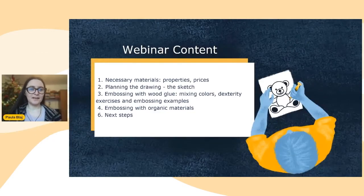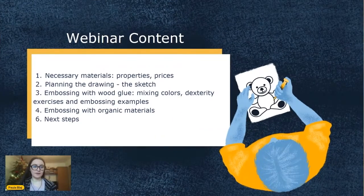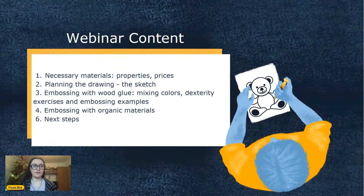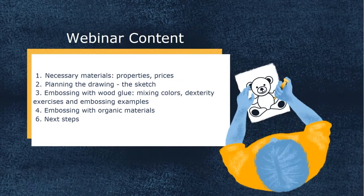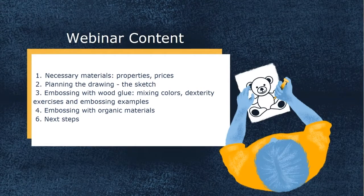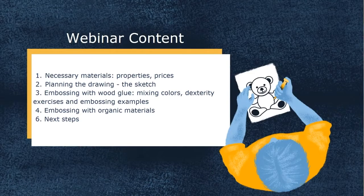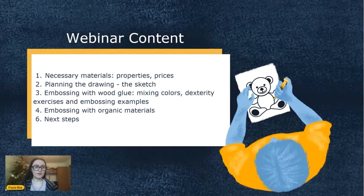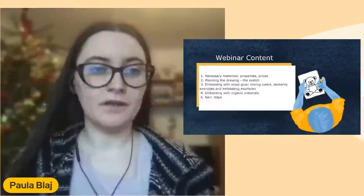Let's see what we will be talking about today. First, we will discover our necessary materials and talk about properties and prices. Then we will start planning the drawing and find out how to create a sketch. Next, we will start embossing with wood glue — we will start by mixing colors, make some dexterity exercises, and then give you some embossing examples. Next, we will emboss with organic materials, and at the end, we will talk about the next steps.